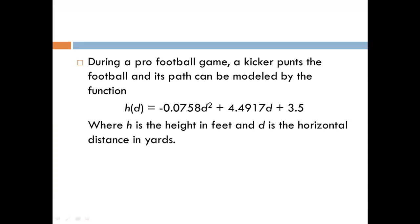During a professional football game, a kicker punts the football and its path can be modeled by the function h = -0.0758d² + 4.4917d + 3.5, where h is the height of the ball in feet and d is the horizontal distance it travels in yards.